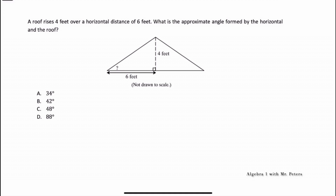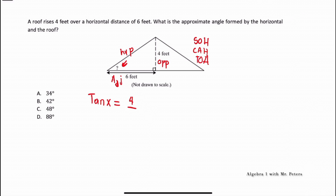In this next problem we're dealing with triangles, and they're asking us to find this angle. We'll use SOHCAHTOA to determine which trig function helps us. Based on the angle, we identify the hypotenuse, the adjacent side, and the opposite side. Since we have opposite over adjacent, we know this is tangent. So we say tan(X) = 4/6.